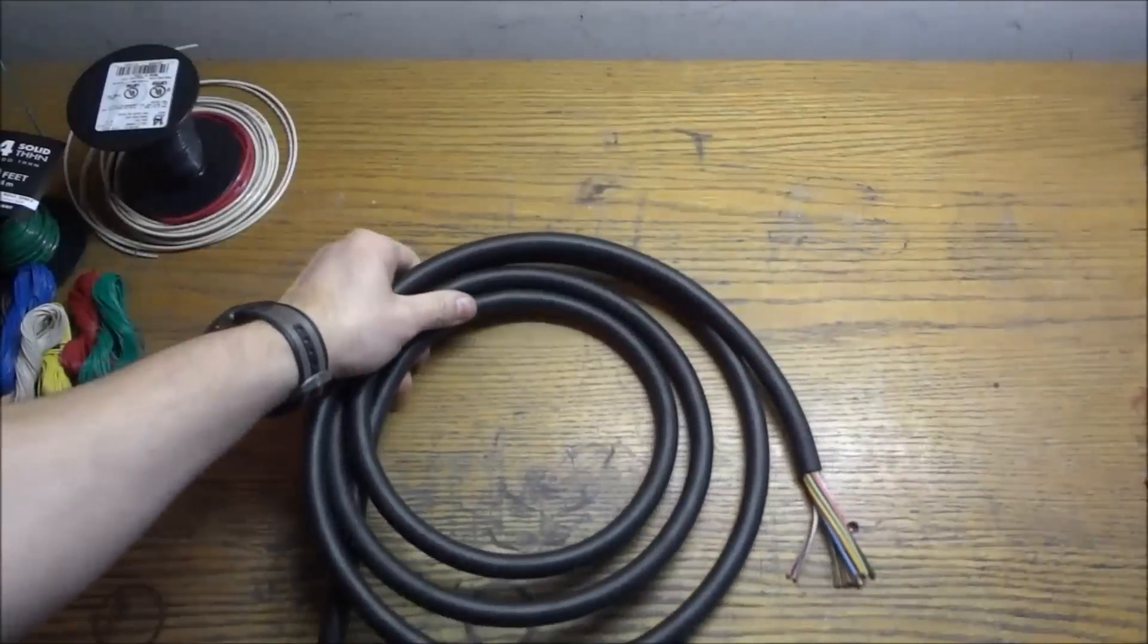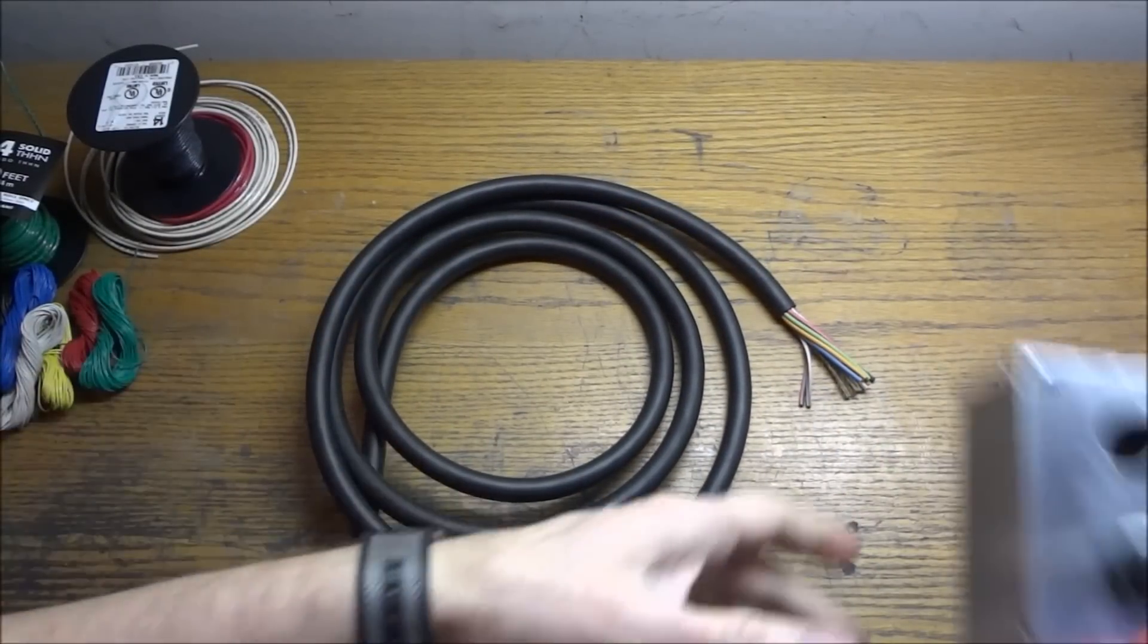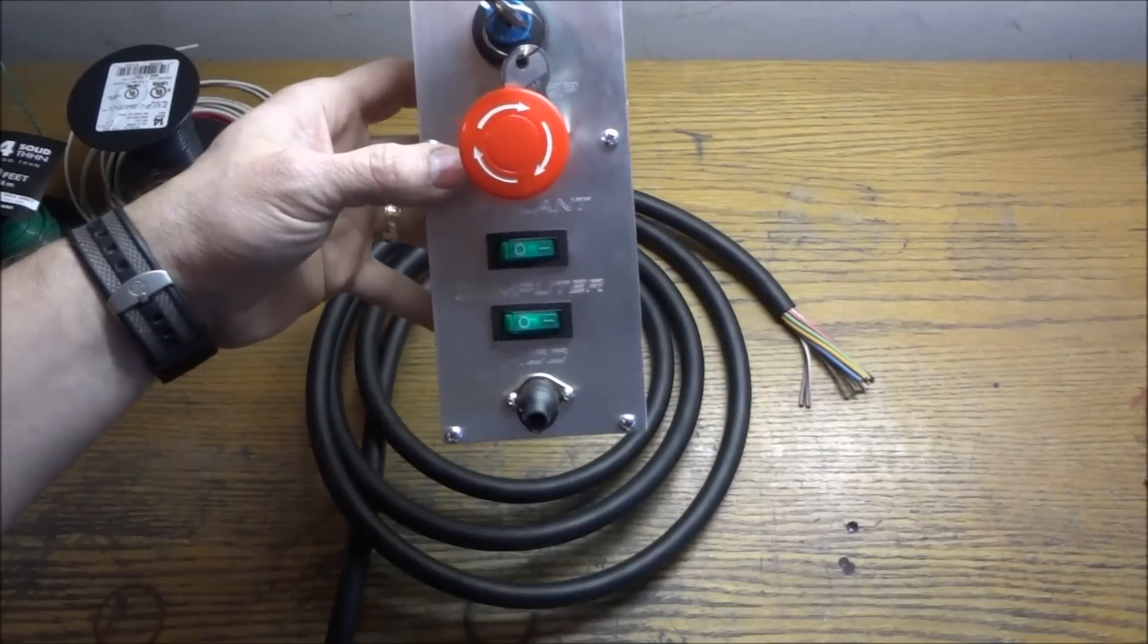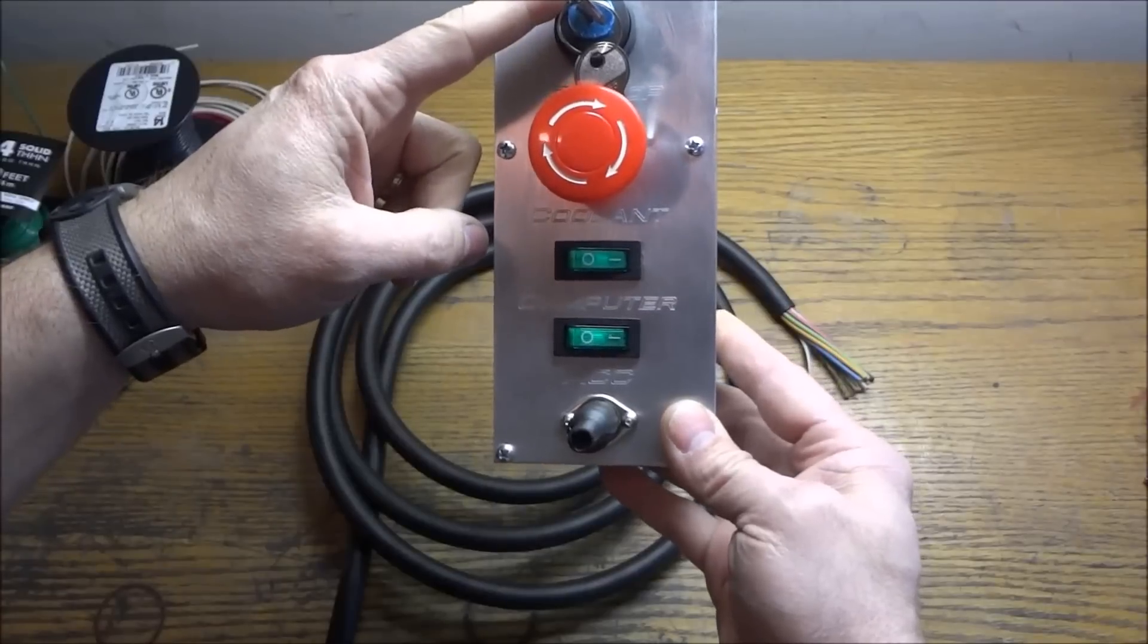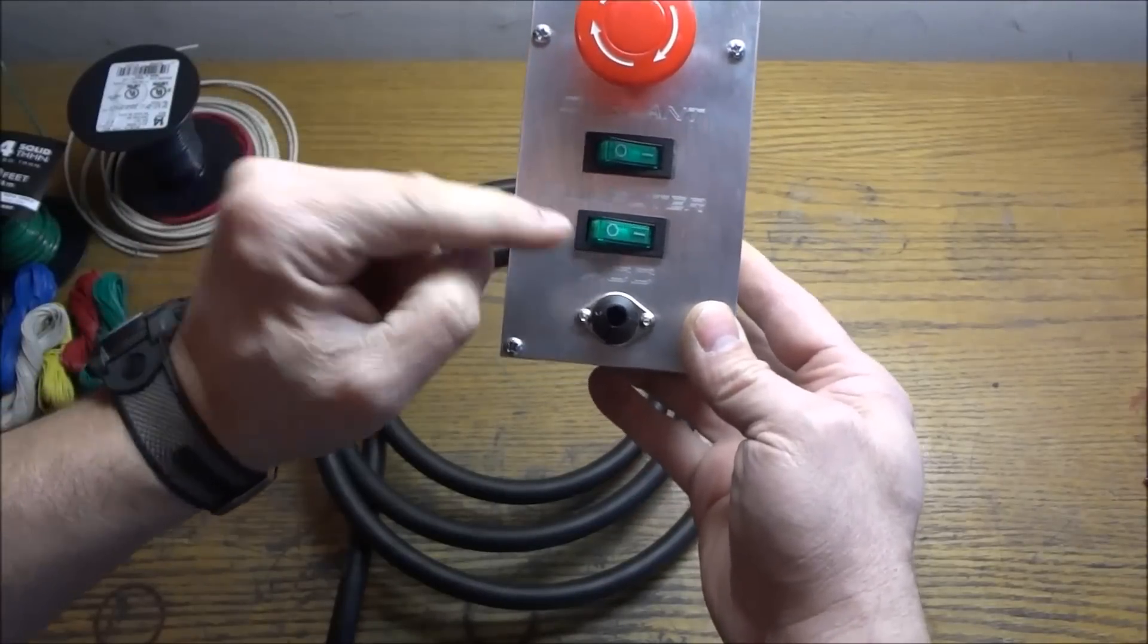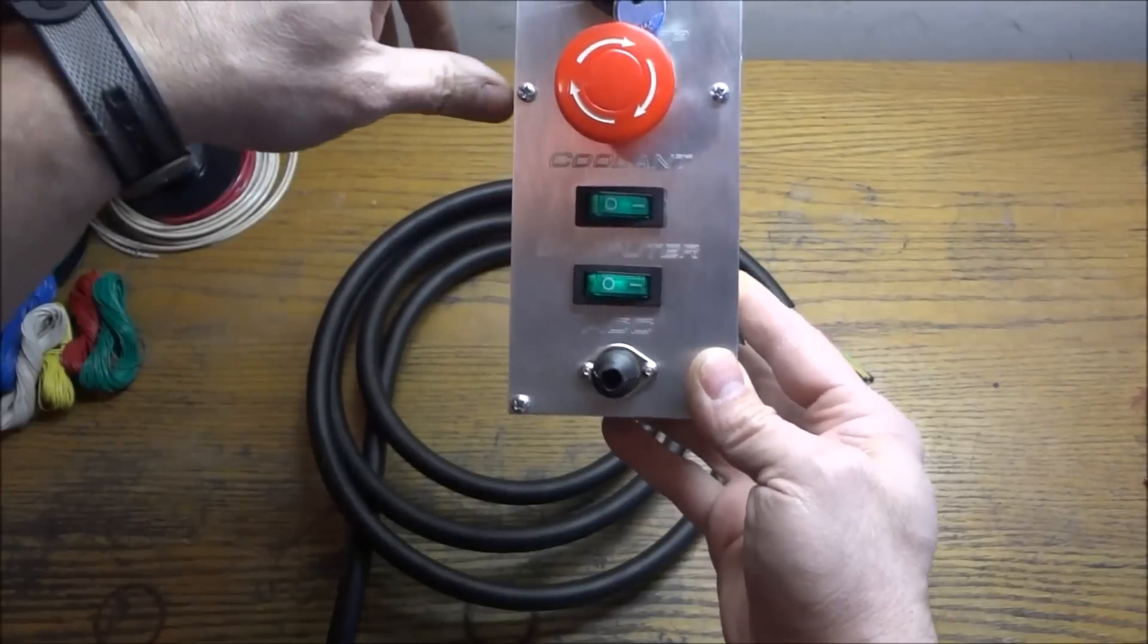Next is our control cable to go to our control panel right here and this will supply the 110 volts for the e-stop, the spindle lockout, the coolant and computer switch, and the start button.